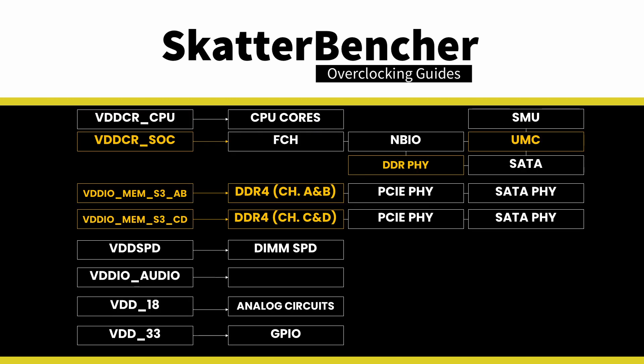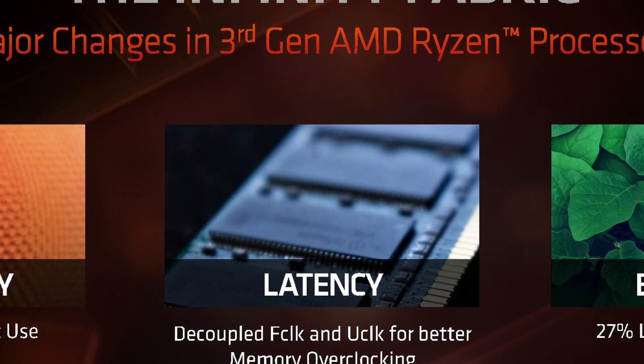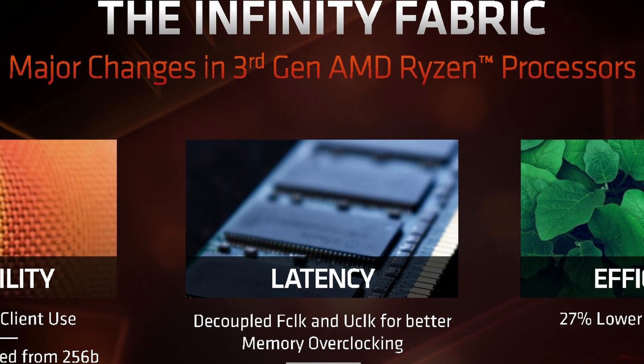The voltage for the memory is provided by two VDD-IO MEM voltage rails, each powering the memory linked to a specific memory controller. The voltage for the memory controller and fabric is provided by the VDDCR SoC voltage rail. By default, the system memory, fabric, and memory controllers run in synchronous mode — meaning they run at the same frequency. When overclocking, we can choose to continue in synchronous mode or switch to asynchronous mode. Synchronous mode is relatively taxing for the CPU, so on most Ryzen CPUs the system will automatically enable asynchronous mode beyond a certain memory frequency.